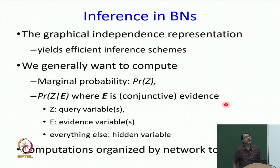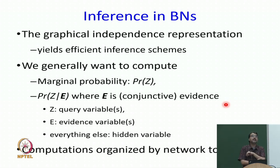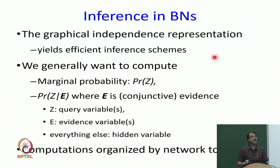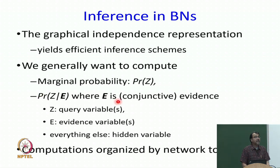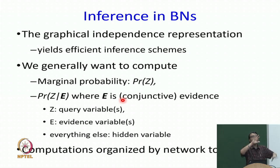What is inference? If you go back to logic, inference was: I know something and I am checking the value of something else. It is the same question here — I know evidence E and I am interested in some query Z, and I want to know the probability of Z given E, because it is a probabilistic model. In SAT or in logic I had to figure out whether it is true, false, or unknown. Generally, graphical independence assumptions make for better inference schemes — we can arrange our computations in the order of the graph. We often want to compute just the probability of Z, which is called the marginal probability: I am not given any evidence, I just want to know the probability of some variable in the context of the full graph.